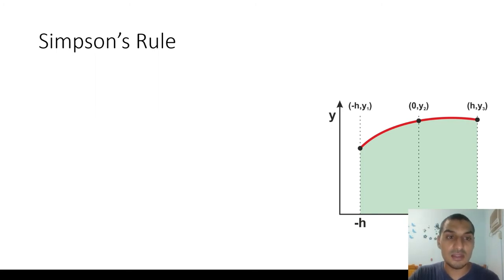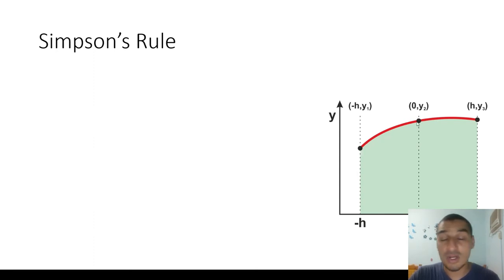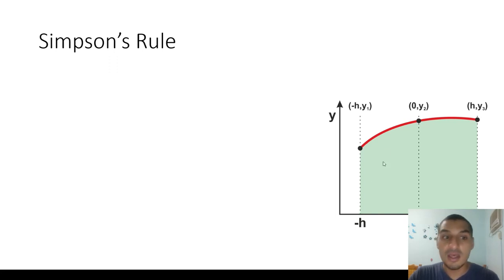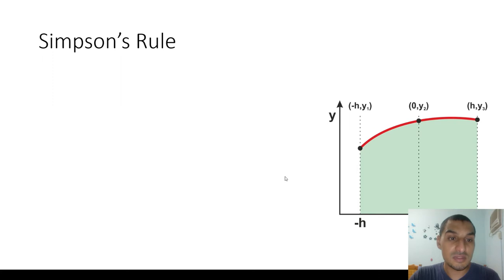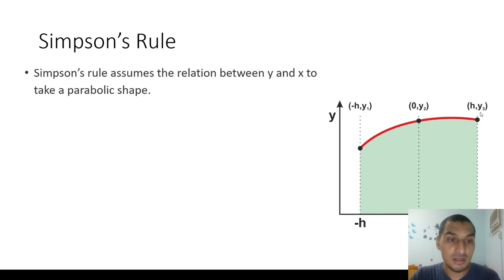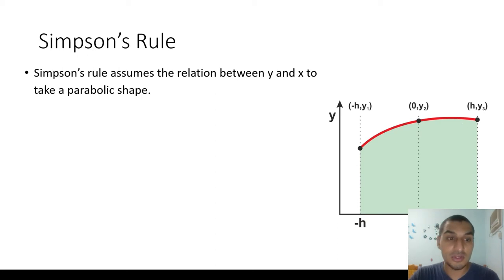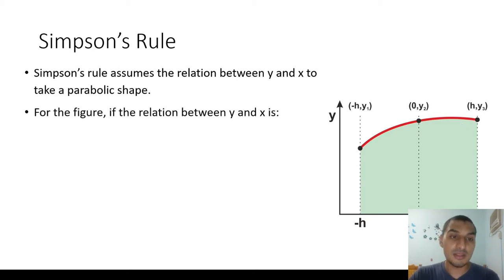The main difference between Simpson's Rule and the trapezoidal rule is that the trapezoidal rule assumes the line between two points is a straight line — that's why we use the area of a trapezium to calculate this area. However, Simpson's Rule does not make that assumption; instead it assumes that the relation between y and x is a parabolic curve.